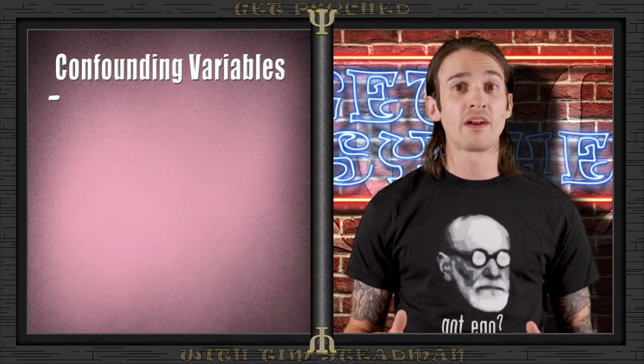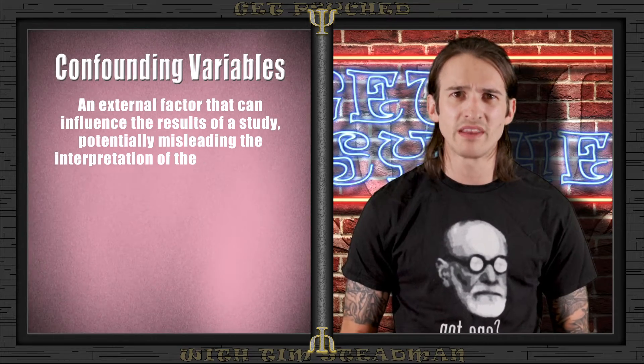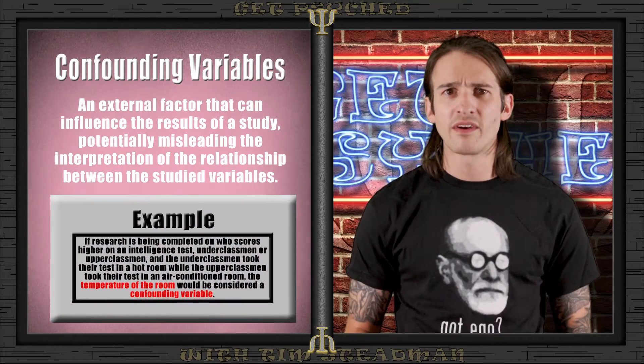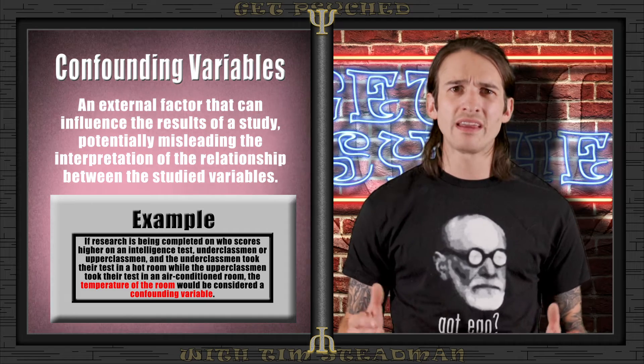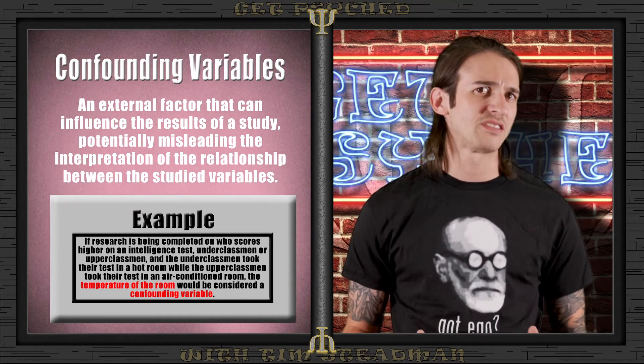Now that we've identified and defined our variables, it's time to think about how other unexpected factors might influence our results. Confounding variables are external factors that can interfere with the relationship between the variables we are studying, potentially making us think a relationship exists even if it does not. When designing a research study, it is crucial for researchers to identify possible confounding variables and attempt to control them so they don't interfere with results.